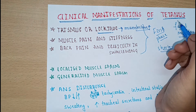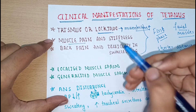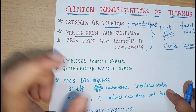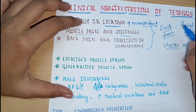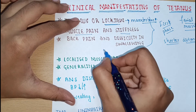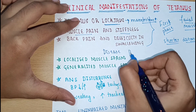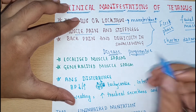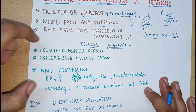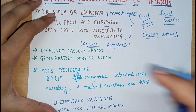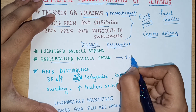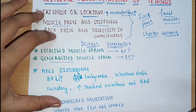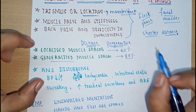Following trismus and lockjaw, there is muscle pain, stiffness of the muscles, back pain, and difficulty in swallowing during the initial stage. As the disease progresses, we can see painful muscle spasms — painful spastic muscle contractions for a prolonged period of time. These can be localized or generalized. In around 80% of cases it is generalized muscle spasm, and in around 20% of cases it is localized.